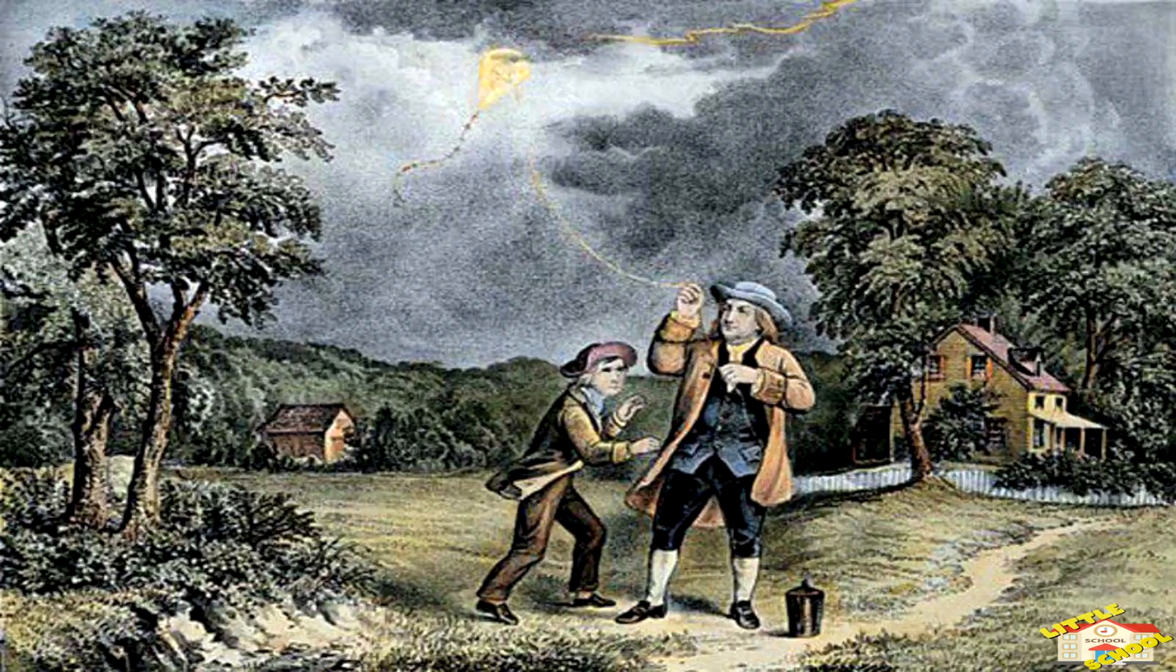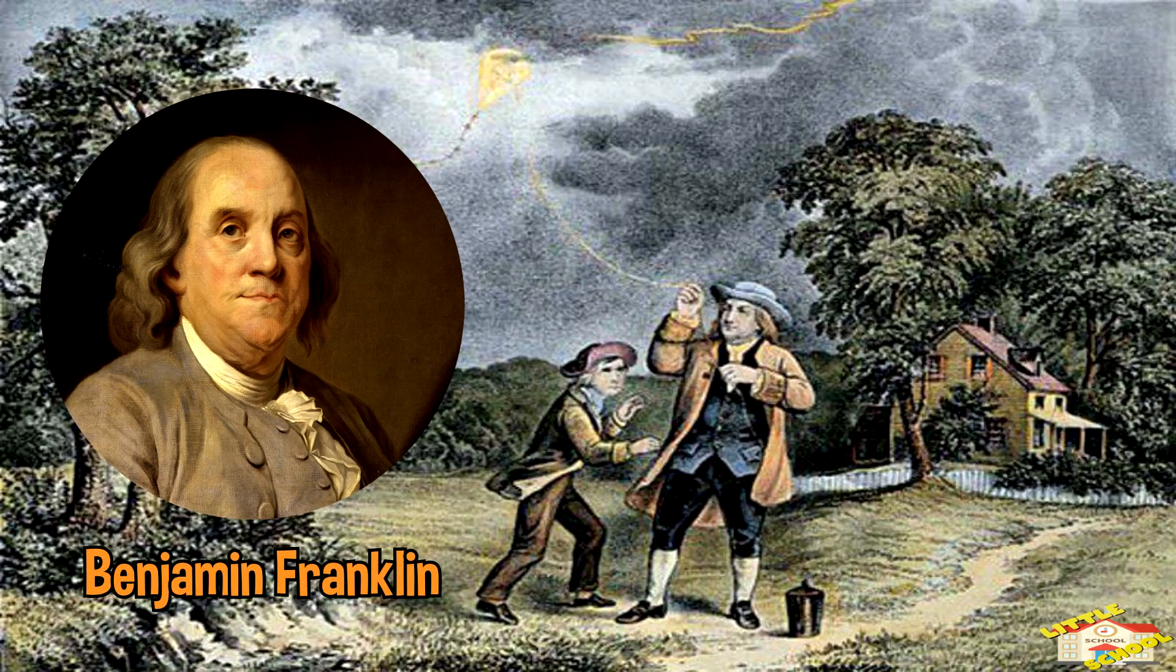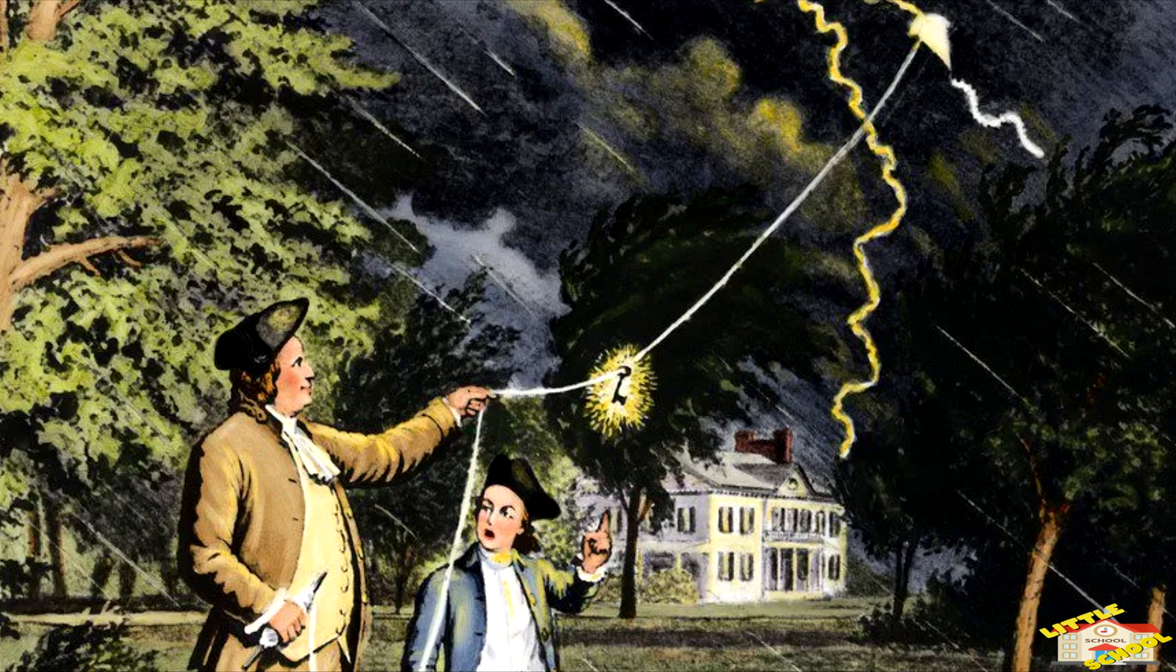In 1752, Benjamin Franklin famously flew a kite during a thunderstorm to prove that lightning was a form of electricity. He used a metal key tied to the kite string, and when the key collected an electrical charge, he felt a shock when he touched it.